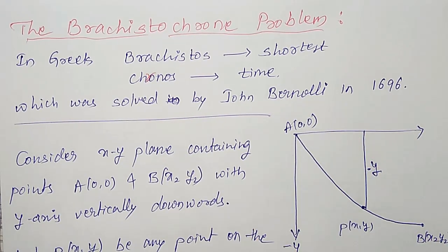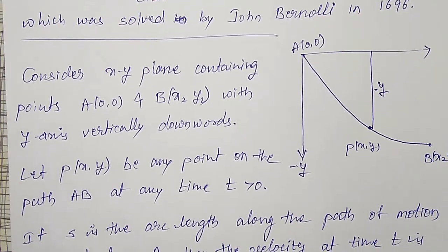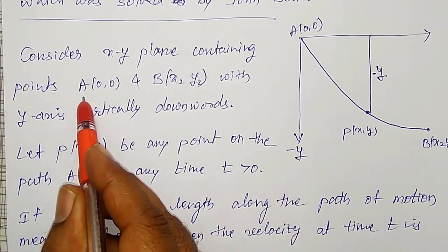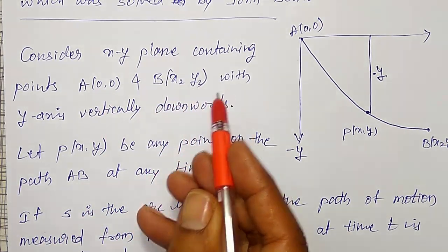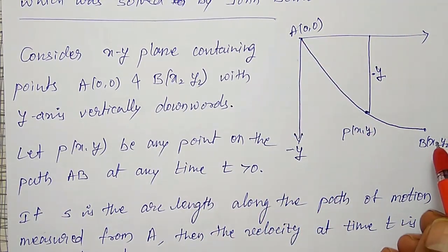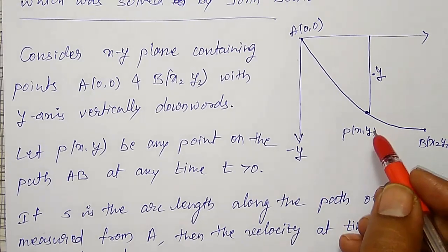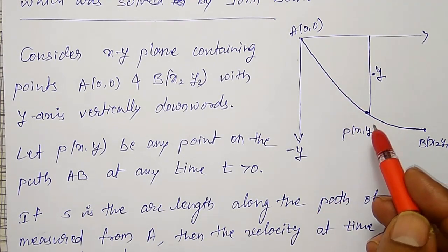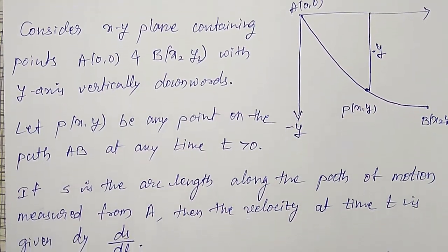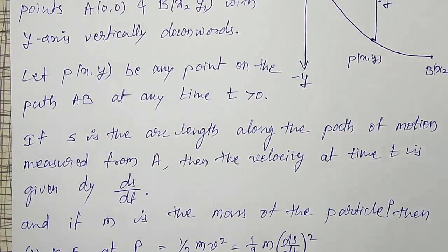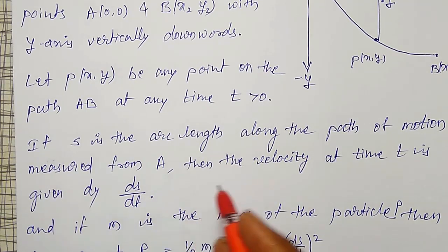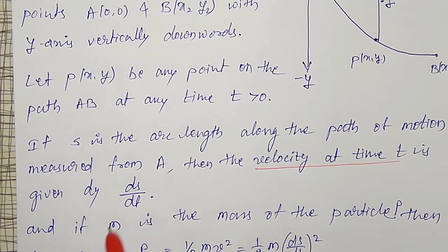What do I have to calculate here? I have to find the path on which the shortest time is taken. To derive that, let me consider the XY plane containing A(0,0) and B(x₂, y₂) with the Y axis vertically downwards. Let P(x, y) be any point on the path AB at any time t, with t greater than zero. If S is the arc length of the path of motion measured along A, then the velocity at any time t is given by dS/dt — that is the rate of change of path with respect to time.